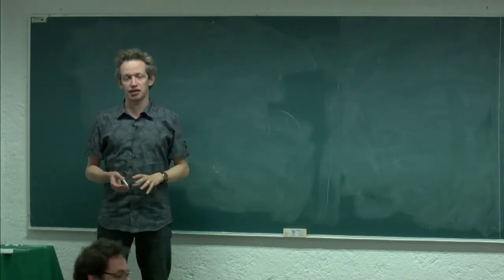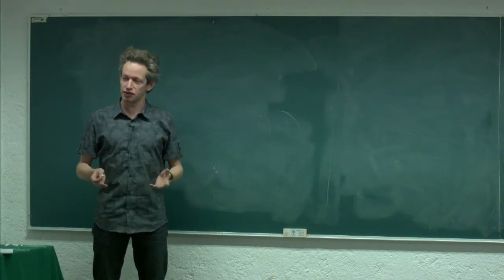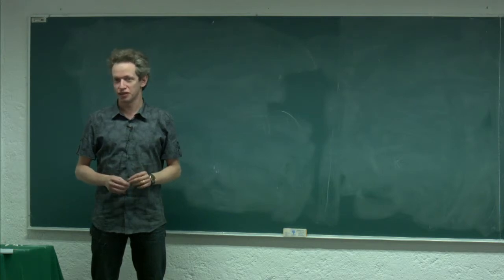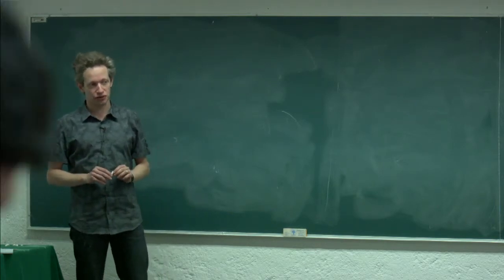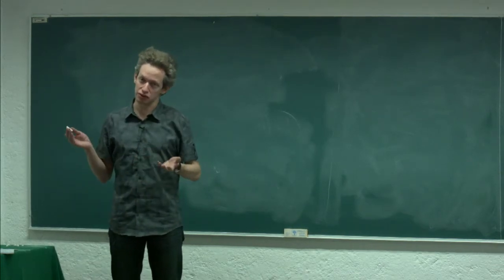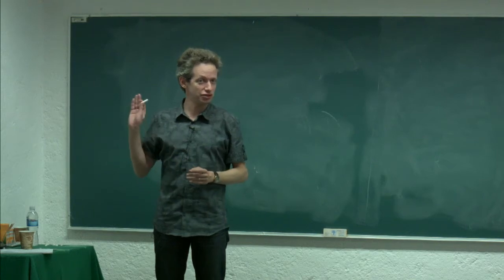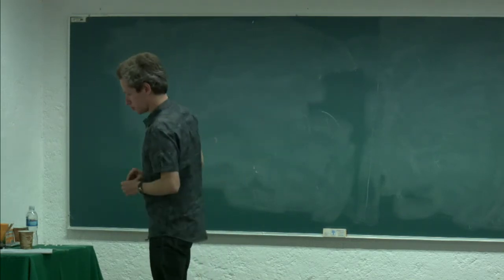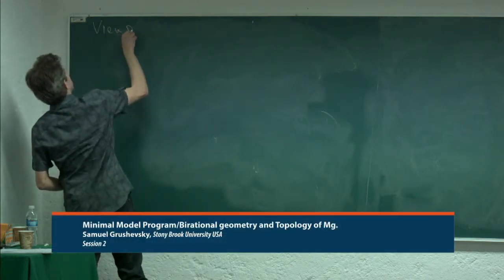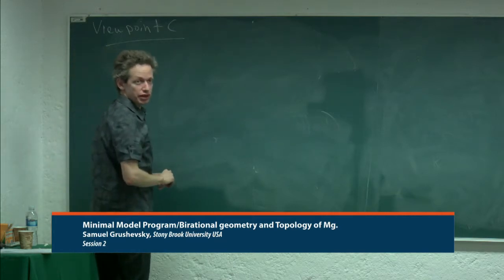Yesterday at the end I said that the moduli space of hyperelliptic curves is an affine variety — we understand this geometry extremely well, and I don't want to spend any more time on that. The other two spaces, the moduli space of curves (the title of this school) and the moduli space of abelian varieties (which is what I'll do today), we don't understand the geometry of so much. So this is viewpoint C, and this is about abelian varieties.